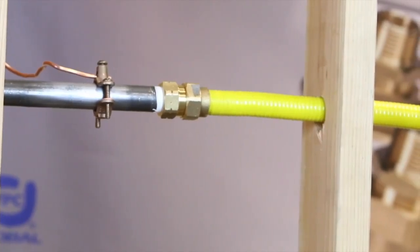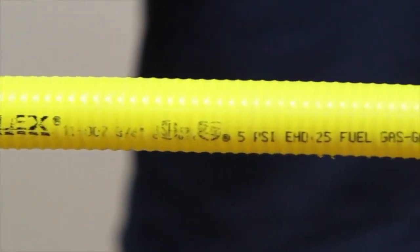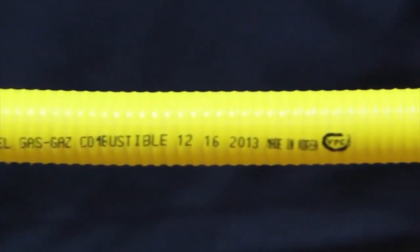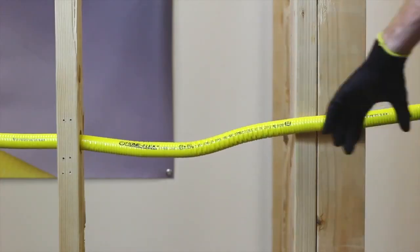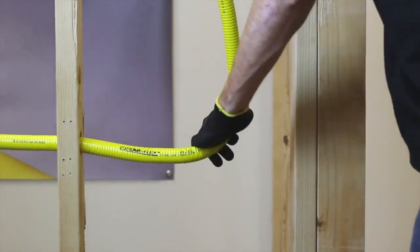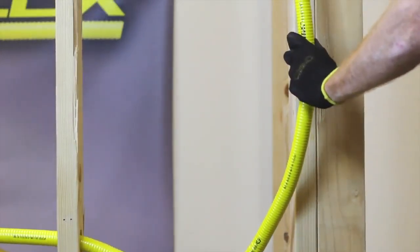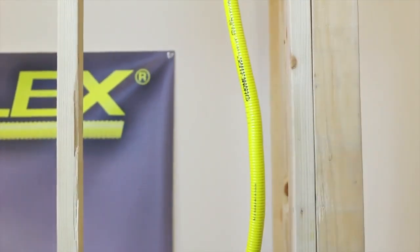When systems are not properly bonded, the current from an energized line can cause electricity to arc or jump from one system to another and damage the CSST. Proper adherence to the bonding instructions should significantly lower the risk of electrical arcing and related damage to CSST.